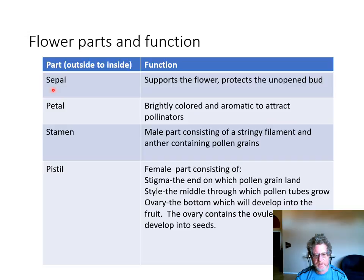The sepal protects the unopened flower bud and supports the flower. The petal is brightly colored and smelly to attract pollinators. The stamen is the male part that produces pollen grains, which contain the sperm. The pistil is the female part — that's what's going to enlarge and ripen into the fruit.